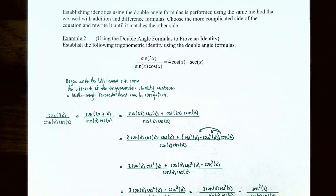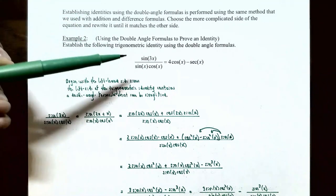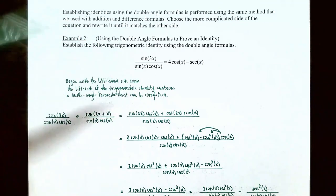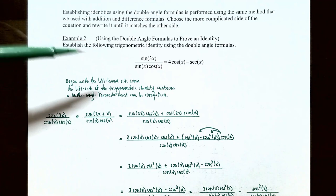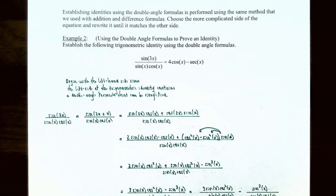Establishing identities using the double angle formulas uses the same method as with the addition and difference formulas. You choose the more complicated side of the identity and rewrite it to match the other side. In Example 2, we'll use the double angle formulas to prove an identity.